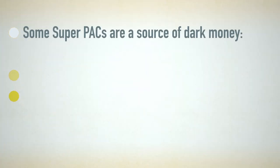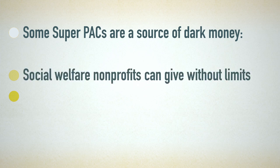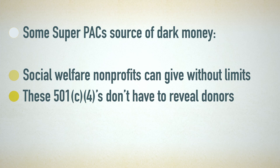Almost all Super PACs report their donors every month, but that depends on what you mean by report. Some Super PACs are the source of what we call dark money — that's contributions the Super PACs get from social welfare non-profits with a 501 tax status. These 501Cs can give unlimited amounts to Super PACs, but they don't have to disclose their donors, and we're seeing that these kinds of non-profits are being set up to serve as a channel for undisclosed donors to the Super PACs.